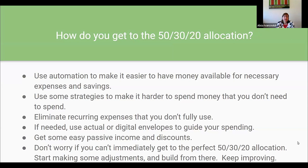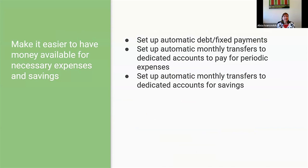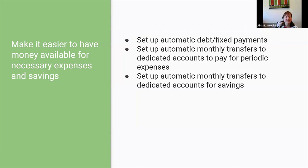We'll also talk about managing cash flows. Let's jump in and talk about the different ways to make it easier to have money available for your necessary expenses and your savings. I'm a huge fan of automation, so we're going to talk about three types: setting up automatic payments for debt and fixed expenses, setting up automatic monthly transfers to dedicated accounts to cover periodic expenses, and setting up automatic monthly transfers to add to your savings accounts.